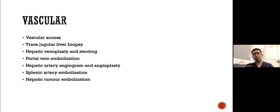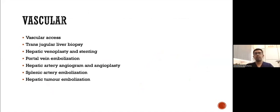Now we move into vascular interventions. There are a wide variety of interventions we carry out, starting from vascular accesses, transjugular liver biopsies, hepatic venoplasty and stenting in transplant patients, portal vein embolizations, hepatic artery angiogram and angioplasties, splenic artery procedures, and hepatic tumor embolizations.